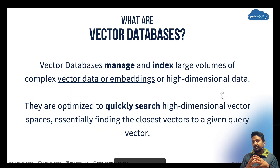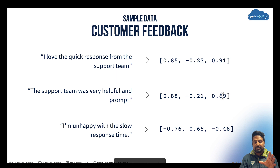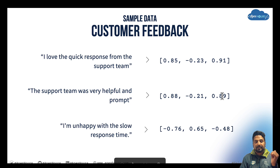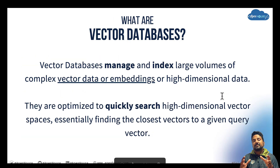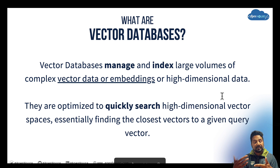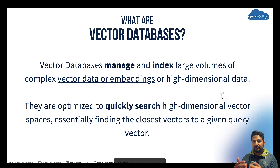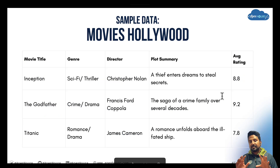Vector databases are basically storage for these high-dimensional vectors. They offer quick search so that you can find nearby or similar vectors in a ranked order of similarity, enabling matching and comparisons — similar to what you're already doing in traditional databases but for complex unstructured data. Now let's go to a more advanced example to make more sense of this conversation.